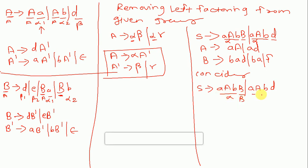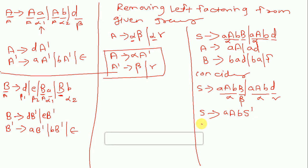So applying the formula: alpha is 'a a b', beta is 'b', gamma is 'd'. According to the formula, S gives alpha S-dash, that is S gives a a b S-dash, and S-dash gives b slash d.